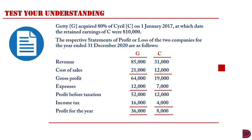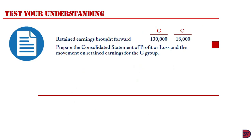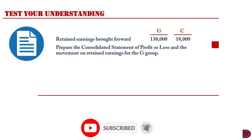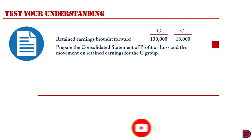We have revenue for both, cost of sales for both, gross profits for both, expenses, profit before taxation, income tax, then profit for the year. Other information states that retained earnings brought forward for Getty was $130,000 and for Cero, $18,000. We are now to prepare the Consolidated Statement of Profit or Loss and the movement on retained earnings for the Gene group.